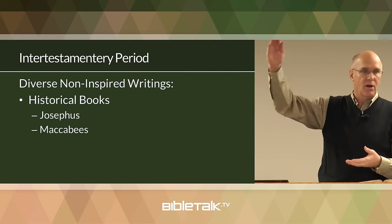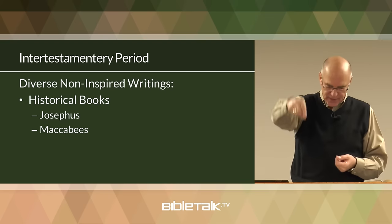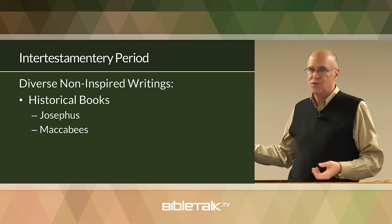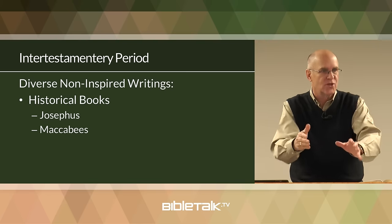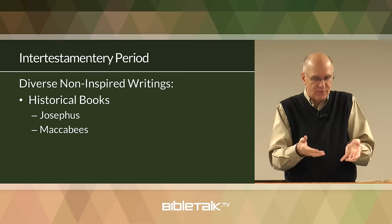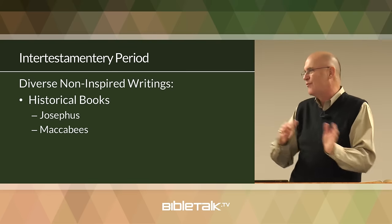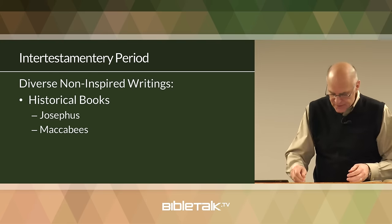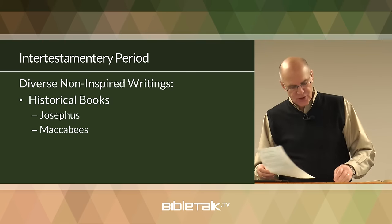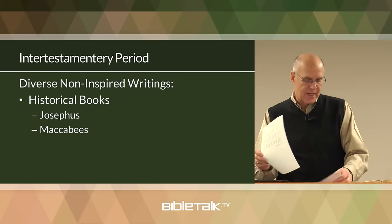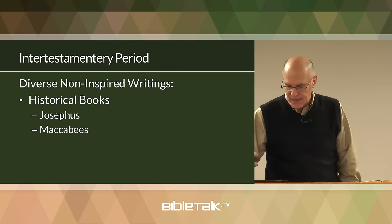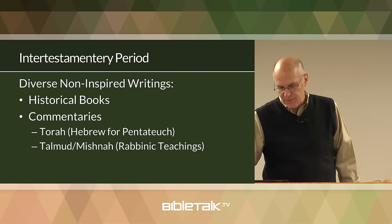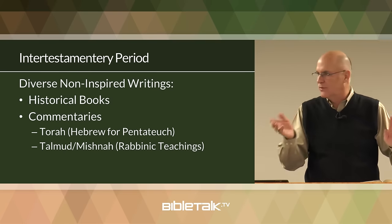According to Josephus, James was thrown from the top of the wall around Jerusalem down into the rocks. He didn't die right away, so the Jews went down and stoned him — a very terrible death. That's not recorded in the Bible; you only know that if you read Josephus. Also during this period, the writing of the Maccabees — first and second Maccabees — record the history of the Jewish uprising.